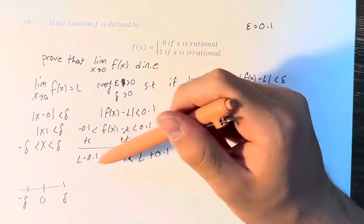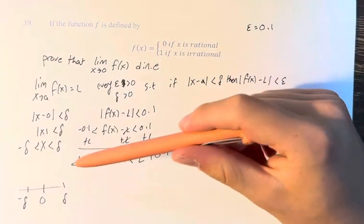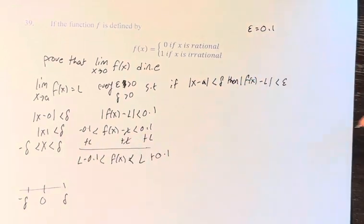So we're saying that the function f of x is going to be between l minus 0.1 and l plus 0.1.